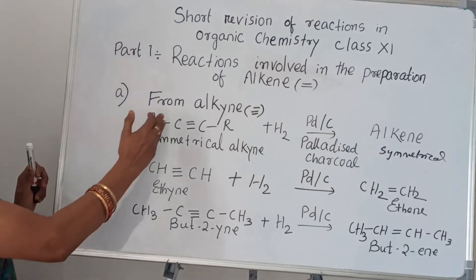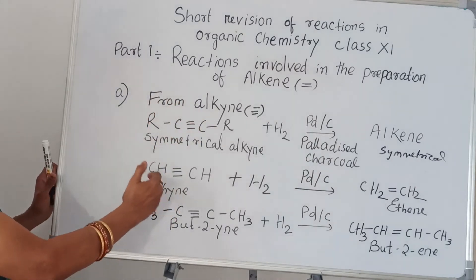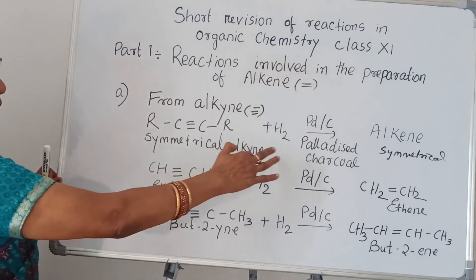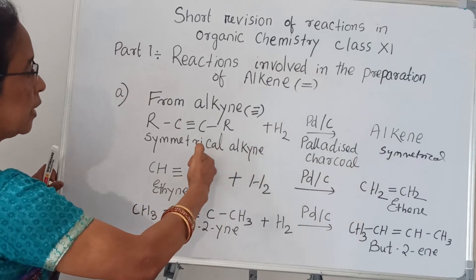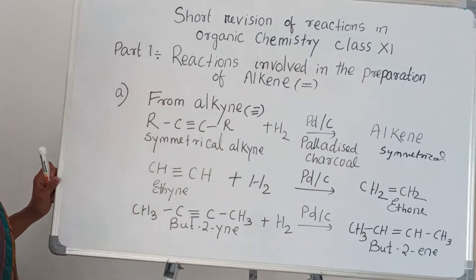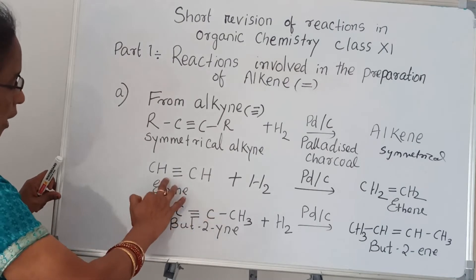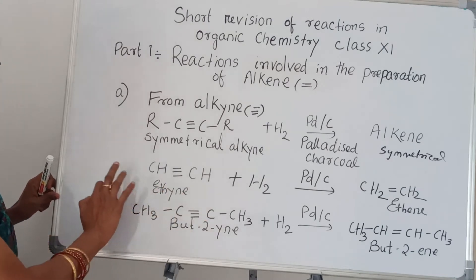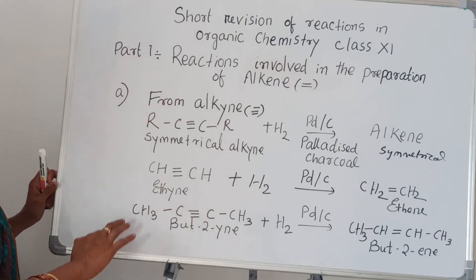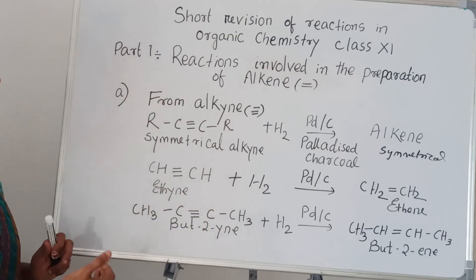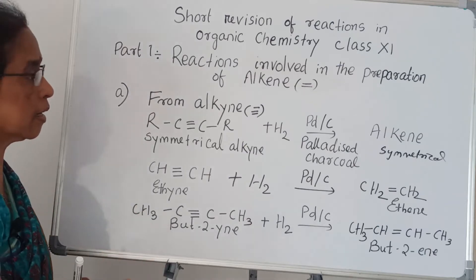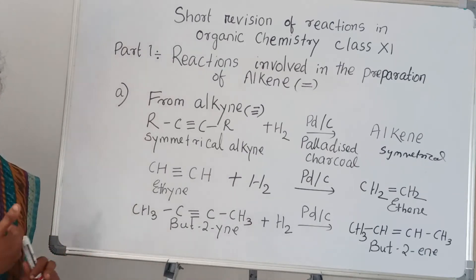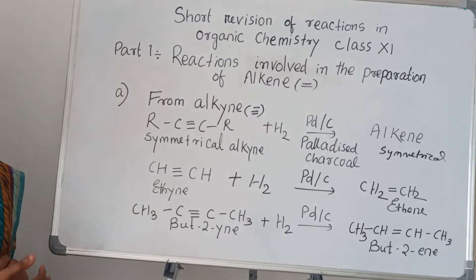So it is clear how to get alkene from alkyne. One case is symmetrical alkyne, and I have explained two examples. Now we will go to unsymmetrical alkyne — from unsymmetrical alkyne, how can you get alkene?